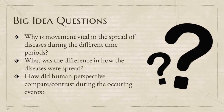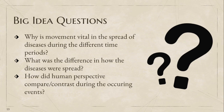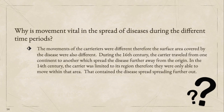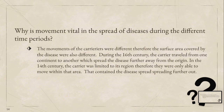Let's go back to the big idea questions. Why is movement vital in the spread of disease during the different time periods? What was the difference in how the disease was spread? How did human perspective compare or contrast during the occurring events? Take a moment to pause this video and write down your answers. A possible answer to number one could have been: the movement of the carriers were different; therefore, the surface area covered by the diseases were also different. During the 16th century, the carriers traveled from one continent to another, which spread the disease further away from the origin. In the 14th century, the carriers were limited to their region, therefore they were only able to move within that area.